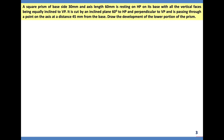Second problem: a square prism of base side 30 mm and axis length 60 mm is resting on HP on its base, with all vertical faces equally inclined to VP. It is cut by an inclined plane at 60 degrees to HP and perpendicular to VP, passing through a point on the axis at a distance of 45 mm from the base. Draw the development of the lower portion of the prism.